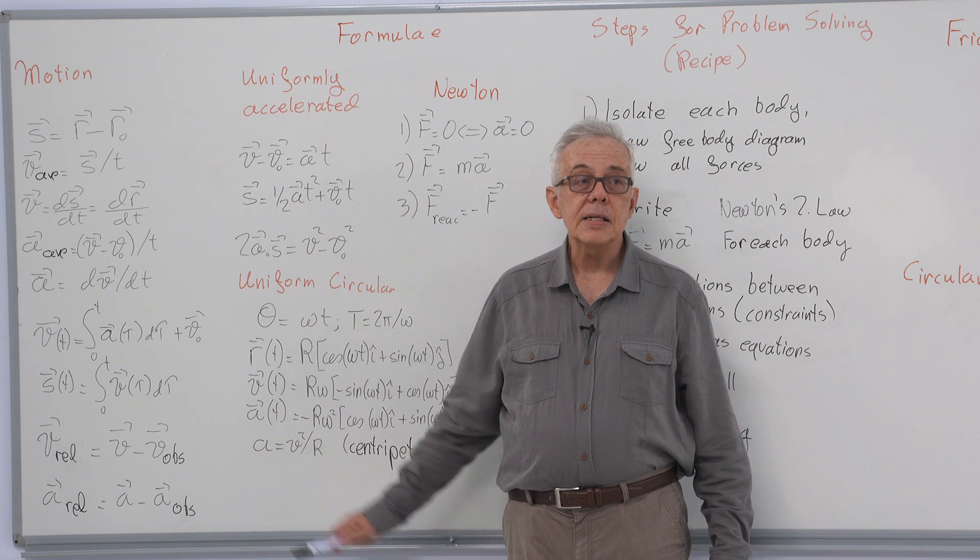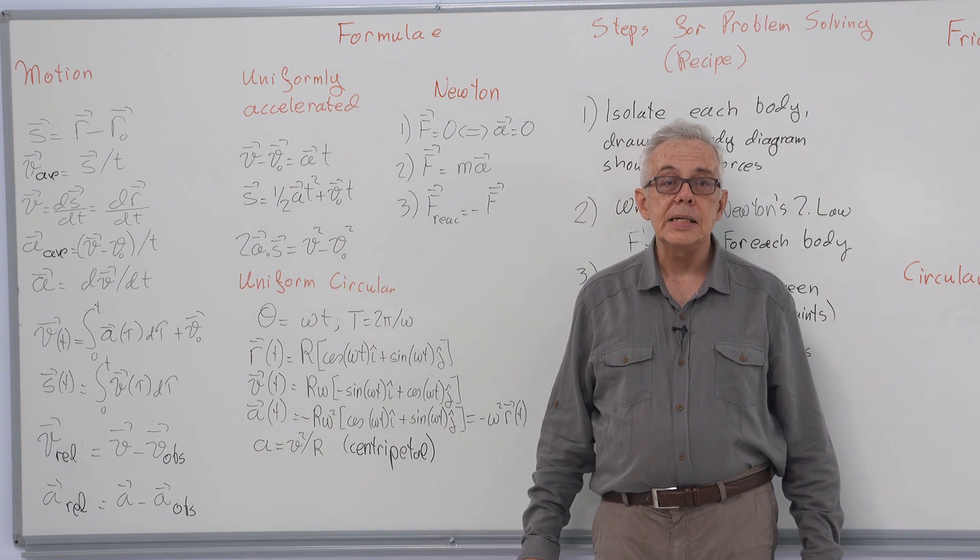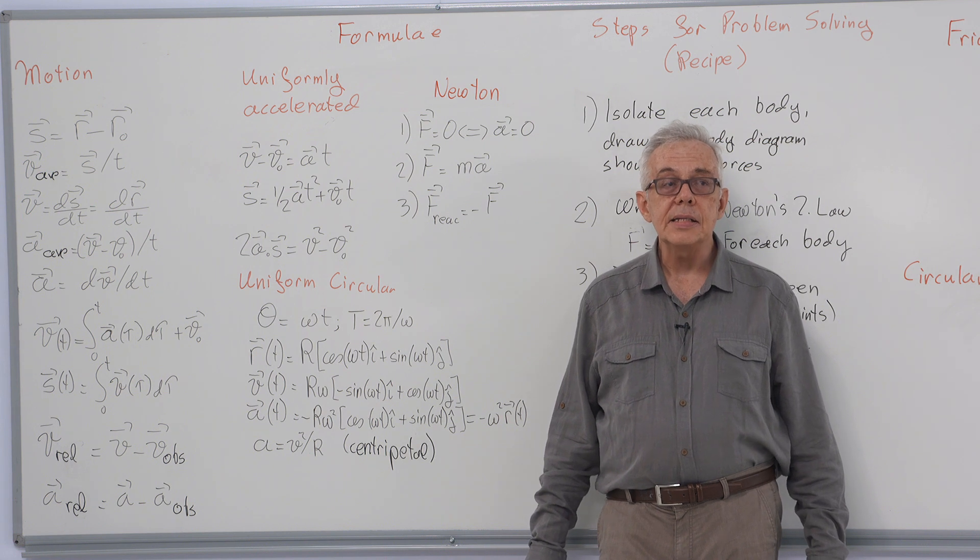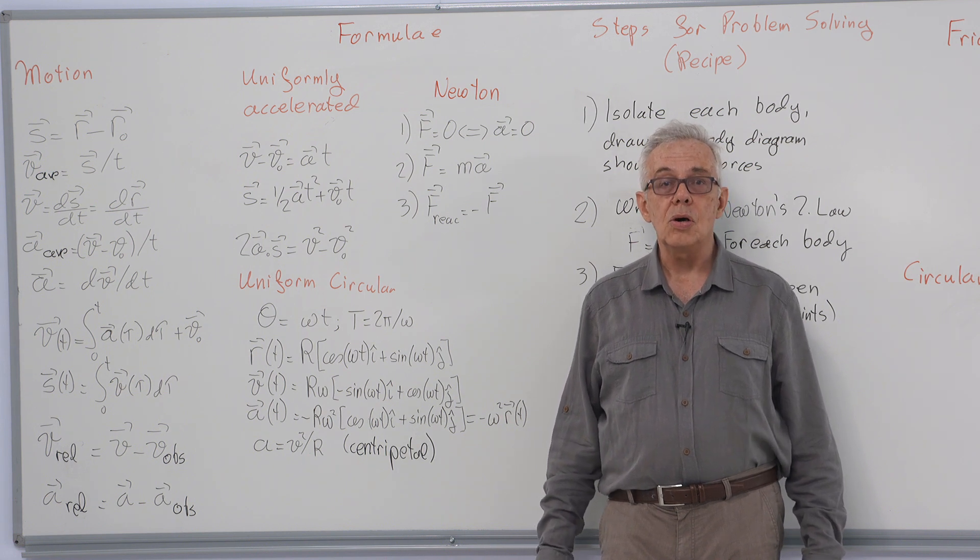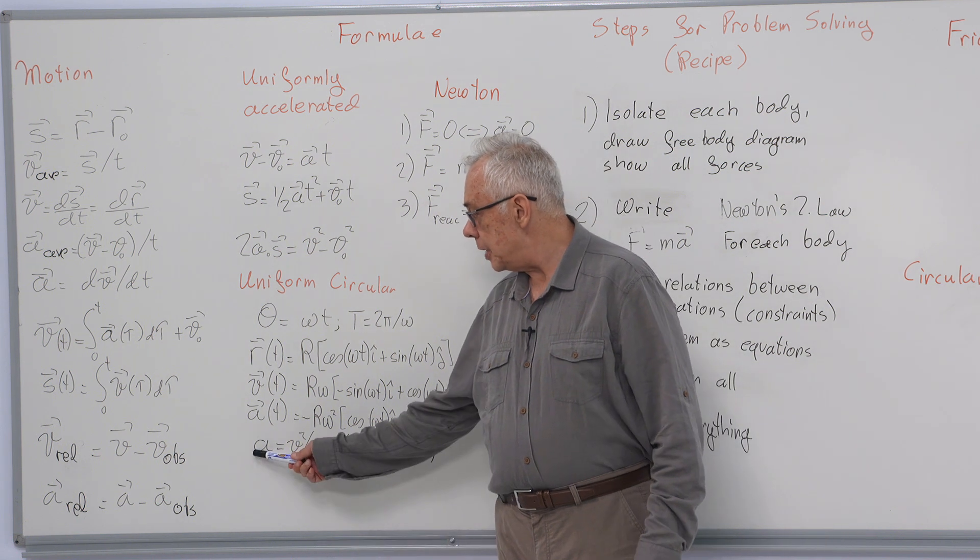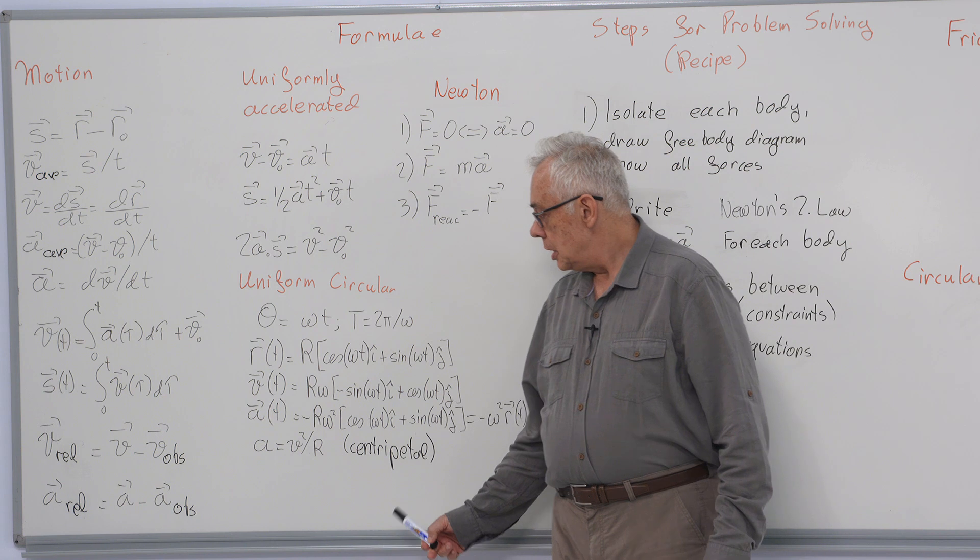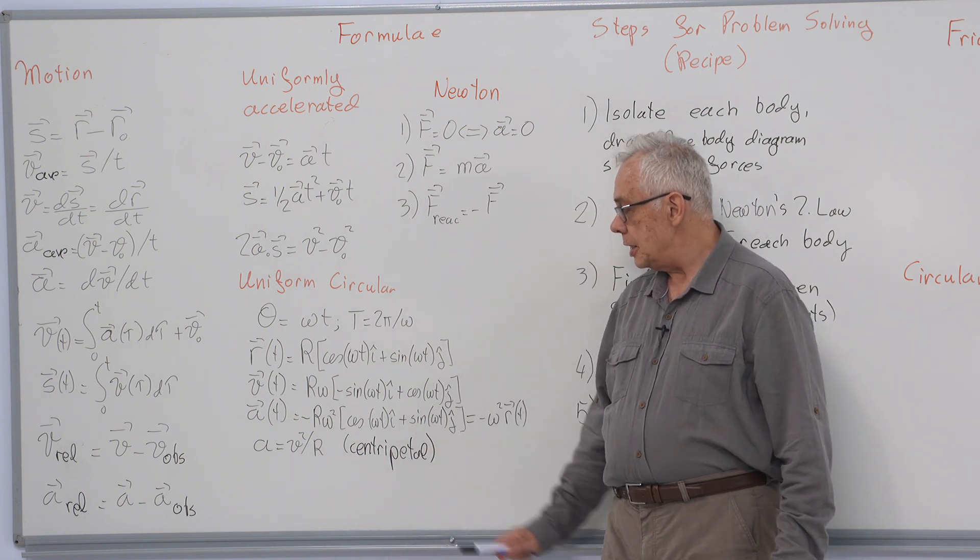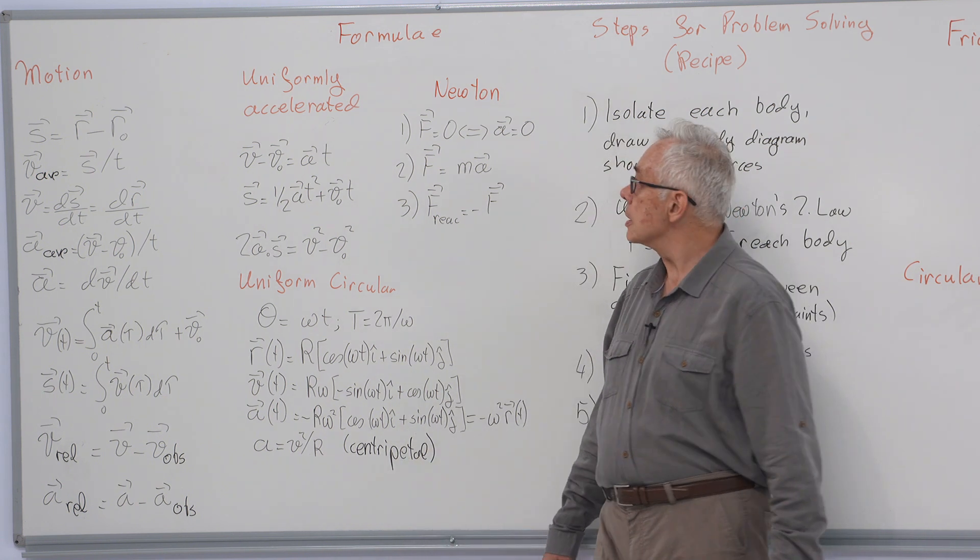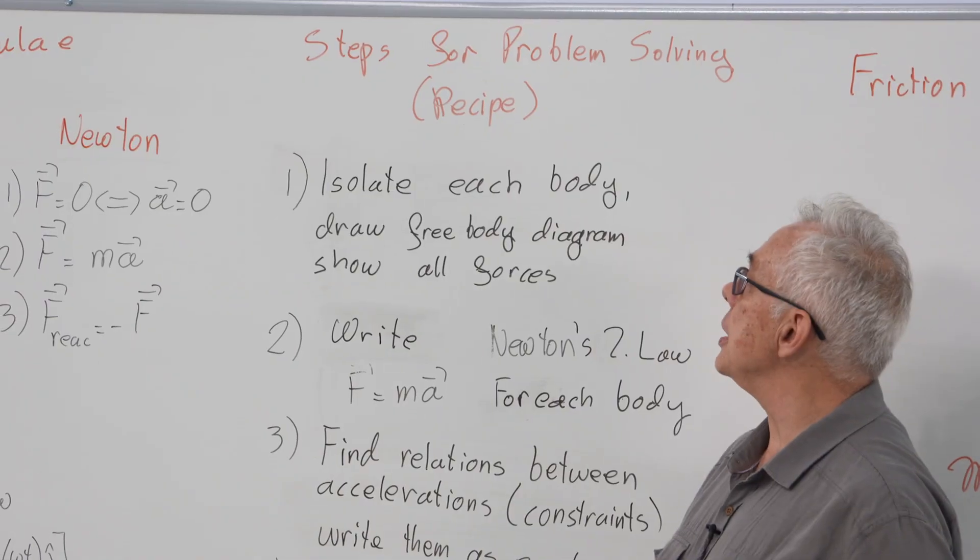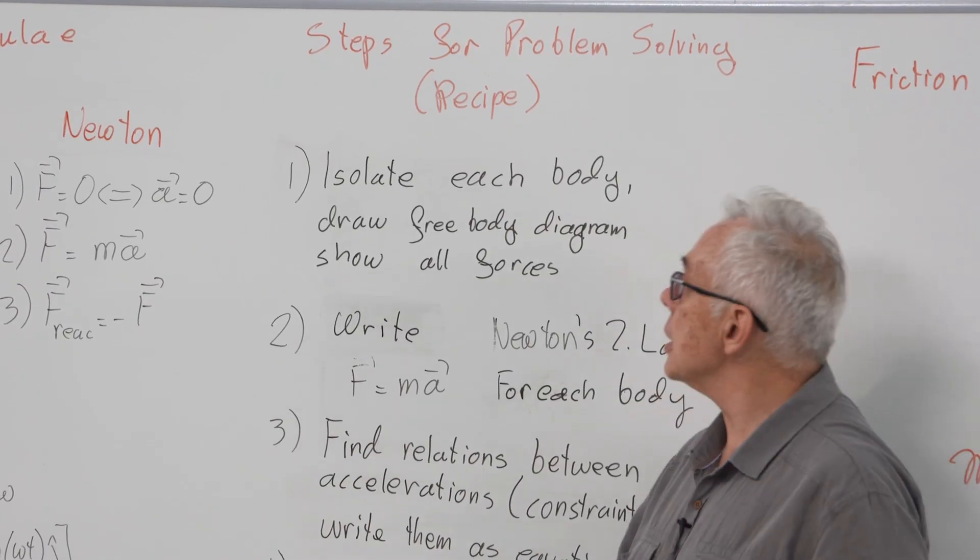Note that acceleration is centripetal, that is directed towards the center of the circle. Its magnitude is given by v squared over r, and its direction, again please note, is centripetal. We also looked at a recipe for solving problems.